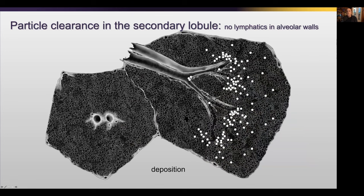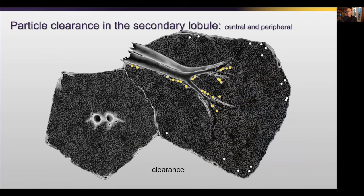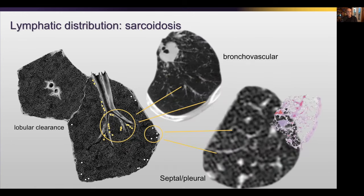The interaction between the lymphatics and surrounding material tells us about the diseases we'll discuss. When you inhale something — a noxious particle, usually less than a couple of microns, or a bacterium — it tends to fall within the center of the secondary lobule, then get cleared both centrally and peripherally, creating a lymphatic pattern. There are lymphatics in the center and periphery of the secondary lobule, but none within the alveolar walls themselves. The classic example is sarcoidosis, where we see nodules along the bronchovascular bundles and thickening along the interlobular septa — a combination of fibrosis and granulomas.